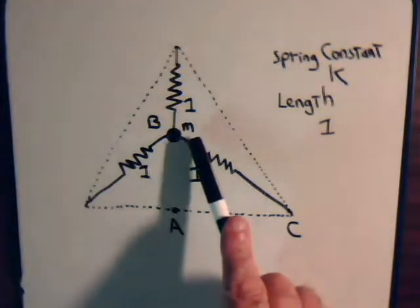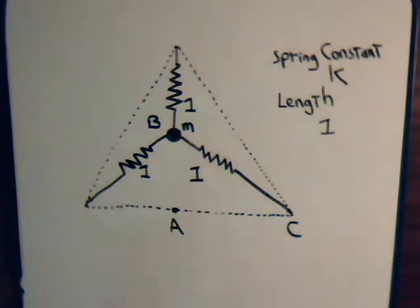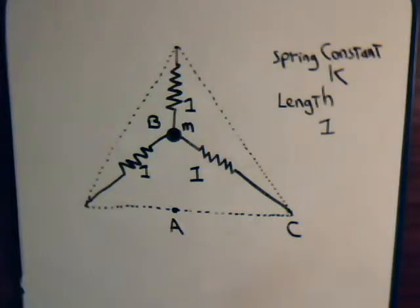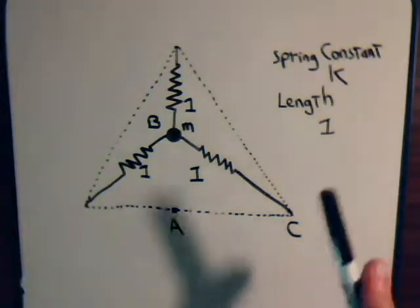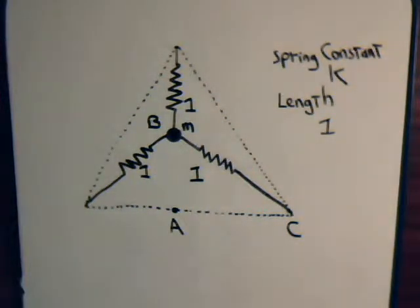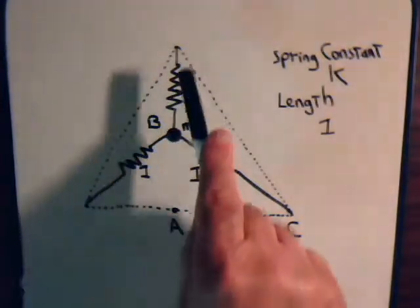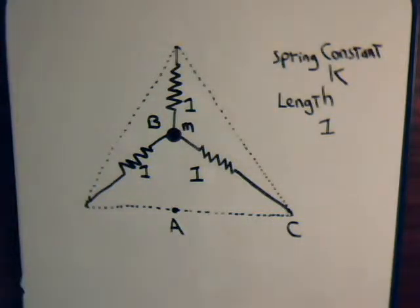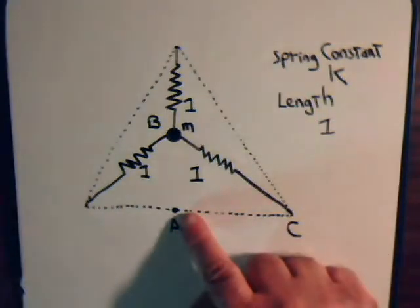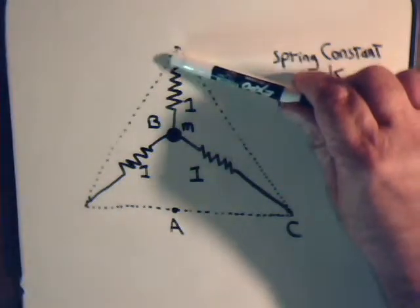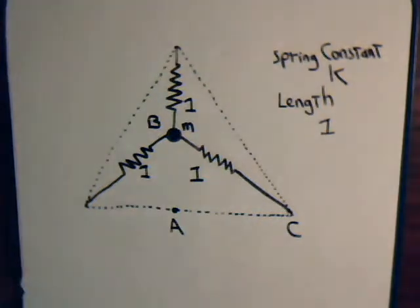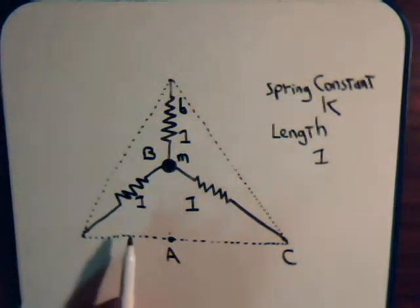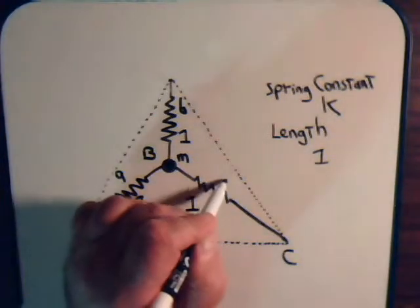In this video we have a block of mass m connected to three different springs. They each have the identical spring constant k, and these springs have identical natural length of 1 each. The sides of each spring are connected to the vertices of an equilateral triangle. We're going to move the mass m downward — we can call this spring B, and the other two springs A and C.